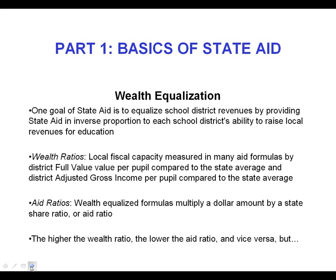So the wealthier a school district community is — usually measured in terms of full value behind each pupil, or income behind each pupil — the less state support they should receive. We calculate and measure this local fiscal capacity for state aid purposes with things called wealth ratios. Many of our aid formulas use the wealth ratios. Typically they are based on full value or actual value per pupil in a school district compared to the state average full value per pupil, or sometimes a combination of that and adjusted gross income per pupil compared to the state average adjusted gross income per pupil.